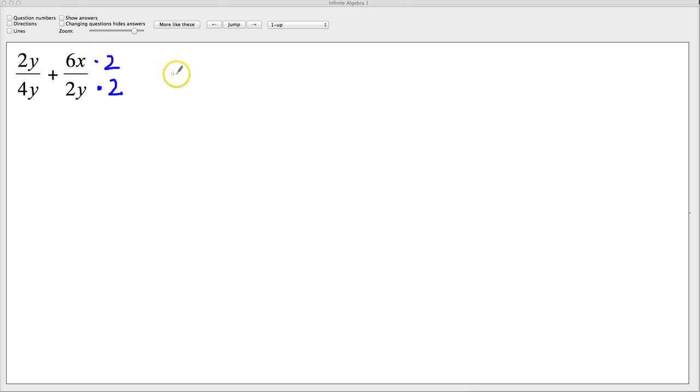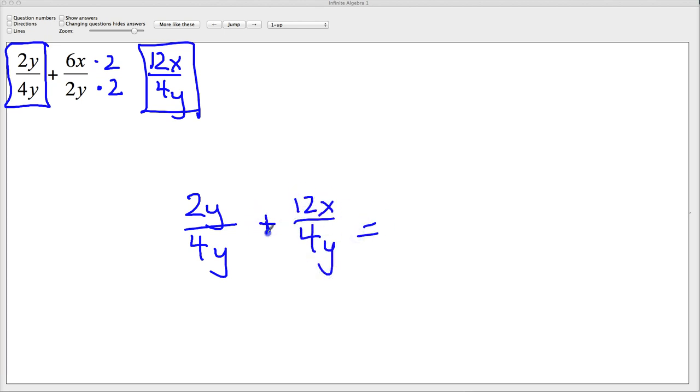Times 2, times 2. So what I end up with is 12x over, and 2 times 2 is, of course, 4y. So this is my second term I'm going to work with. I'm adding these two together. So I'm going to do 2y over 4y plus 12x over 4y. If you haven't seen the video on solving these when they have like denominators, which they do now, you probably need to.